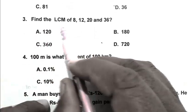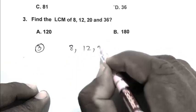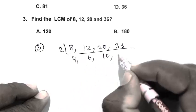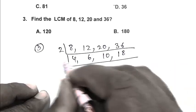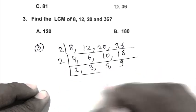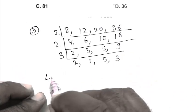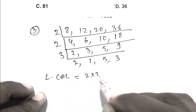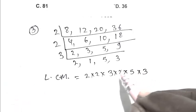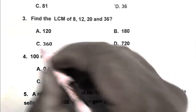Question number 3: Find the LCM of 8, 12, 20 and 36. So friend, working through the prime factorization: 2, 2, 3, 2, 5, 3. So friend, the LCM is 2 × 2 × 3 × 2 × 5 × 3 = 15, 30, 90, 180, 360. So friend, C is the right answer.